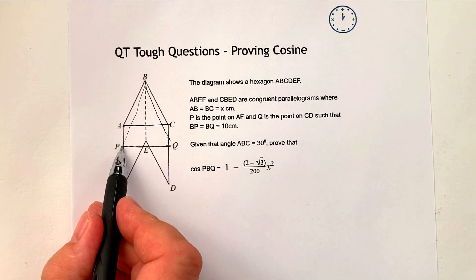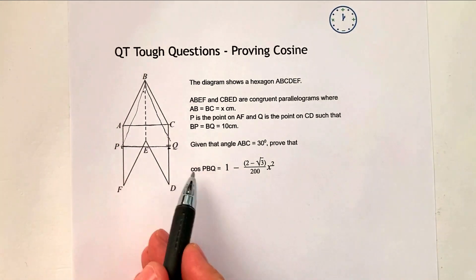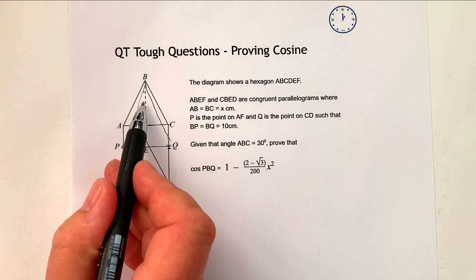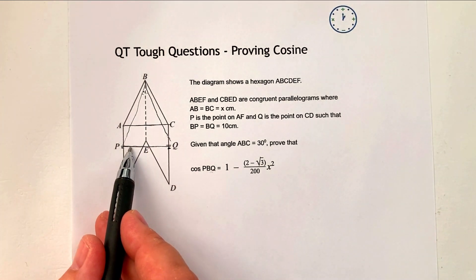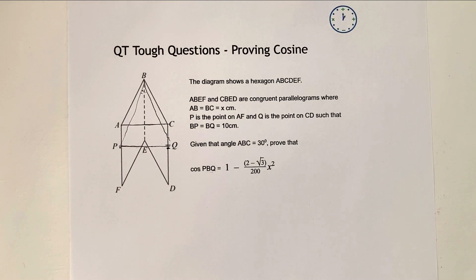Now, I need PQ in order to use that for the cosine. Remember, it's the cosine of PBQ. So I need this. This effectively would be A. Okay, so I do need that. I need to find that out.